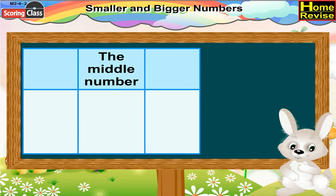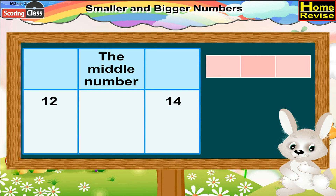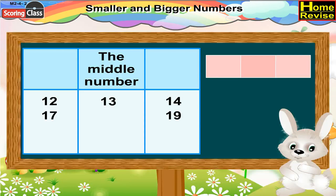Now let us find out the middle number. 12, dash, 14. What comes between 12 and 14? Let's start counting: 12, 13, 14. Yes, the number is 13. Similarly, let us find out which number comes in the middle of 17 and 19. Yes, it is 17, 18, 19. So, the number is 18.